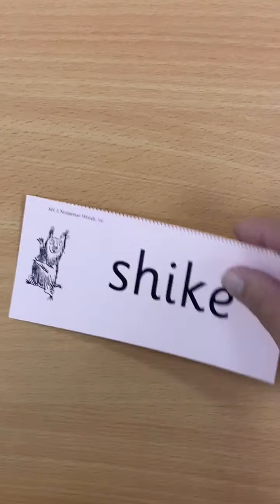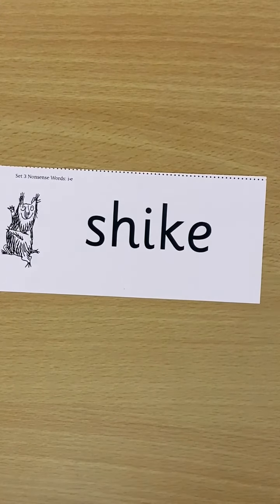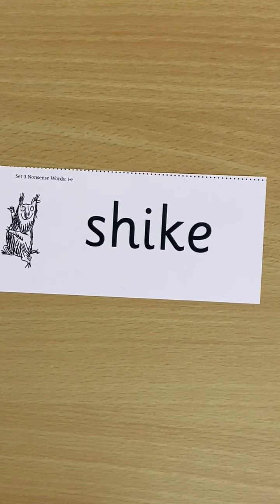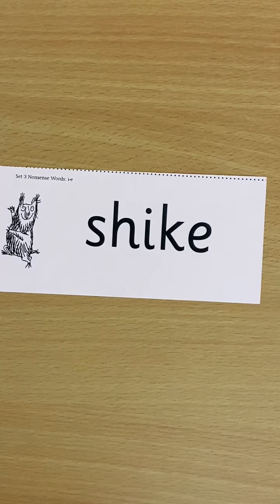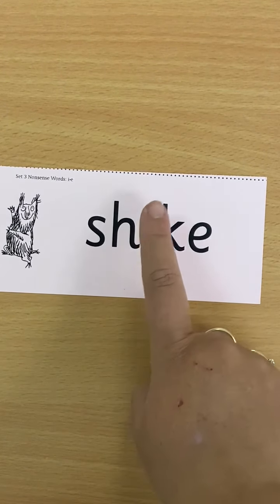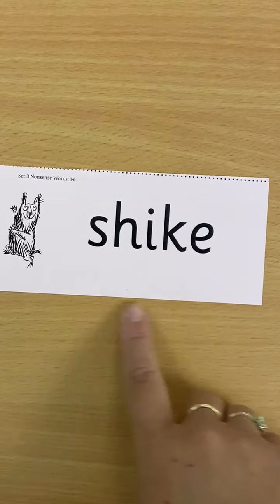I'm going to show you some alien words — words that don't make sense and words that don't have sound buttons. You need to really look for those special friends to help you read the word. We'll do the first one together: Sh, I, K — shike.